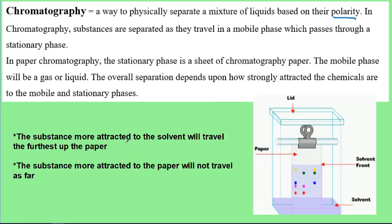The substance more attracted to the solvent will travel the furthest up the paper. Substances more attracted to the paper will not travel as far. Generally, the paper will be one polarity and the solvent will be the other. So if we're using water as our solvent, it would be polar and we'd want to use a nonpolar paper. Here, red is the least attracted to the solvent while yellow seems to be the most attracted.